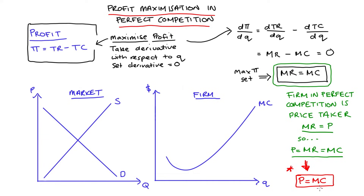Looking at our diagrams, we have a market diagram on the left hand side. We have our market demand, which is the sum of our consumers' demand curves, and our market supply curve, which is the sum of our producers' supply curves. The price in the market is determined at the intersection of these two curves, giving us P star, and also big Q star — the quantity traded in the market. Our perfectly competitive firm, being a price taker, just takes that market price as given.